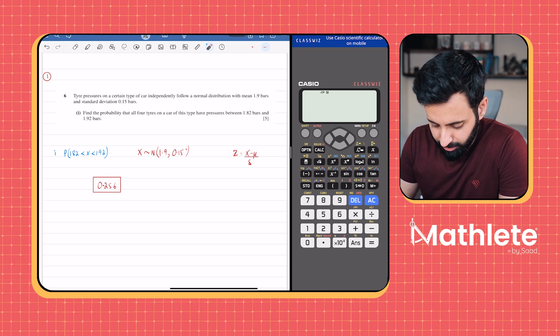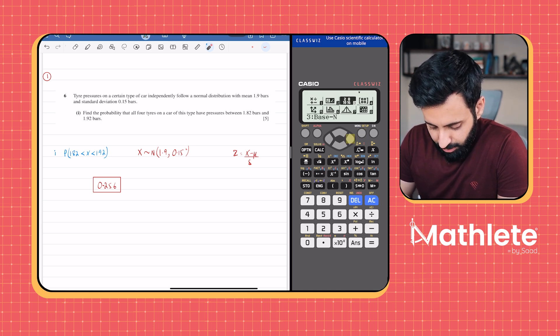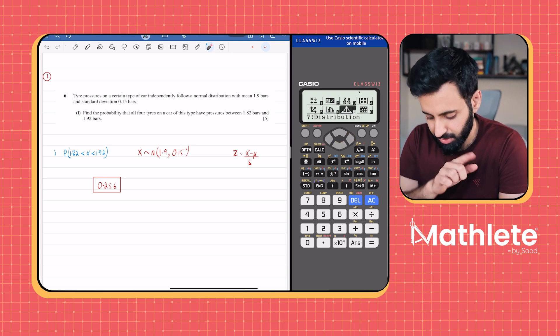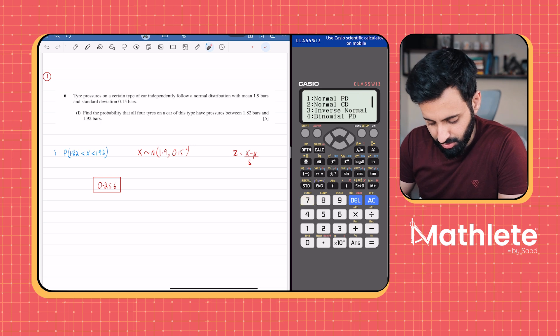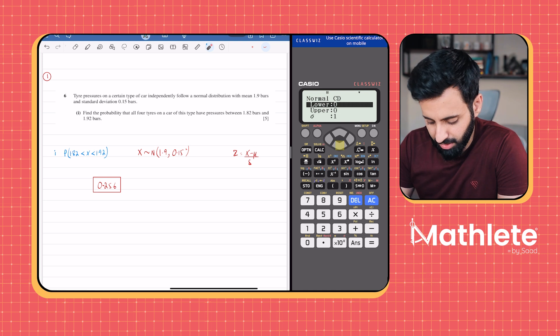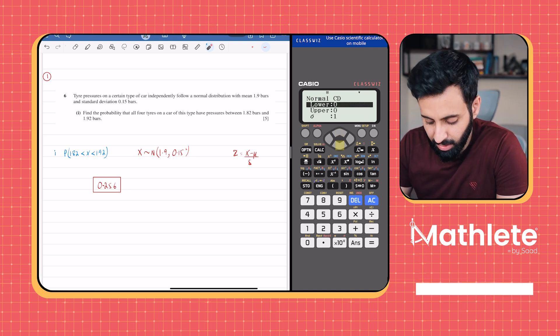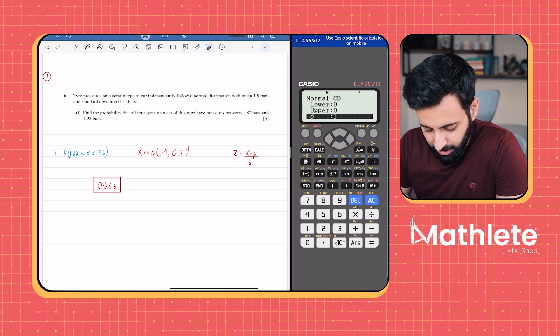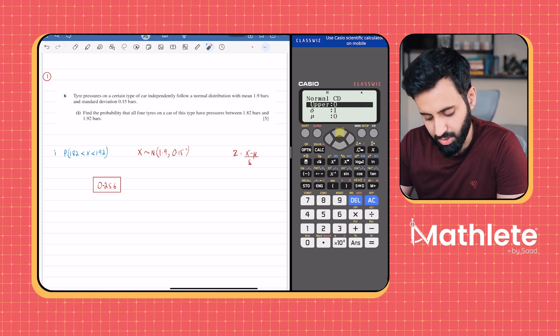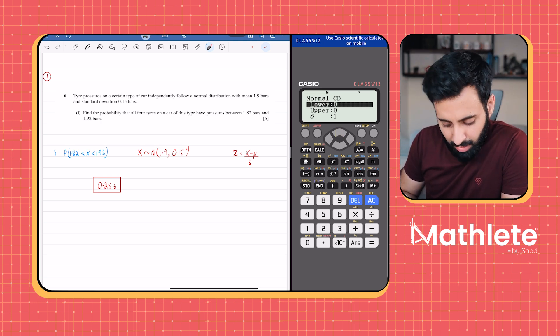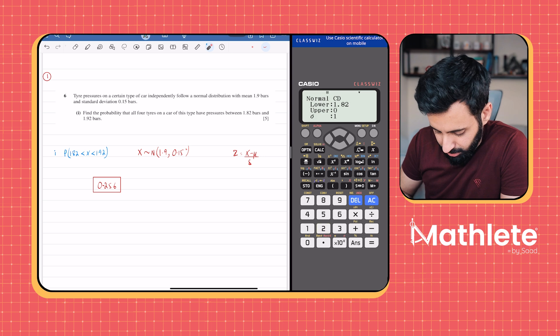What you do is open your calculator, press menu. If you have one of those calculators which has this feature, you will see distribution - a bell curve at number seven with distribution. Press that, go on to normal CD. Now let's first study the values that we have to enter. There's the lower limit, that means the lower value of x, the upper limit of x, the standard deviation which is sigma, and mean which is mu.